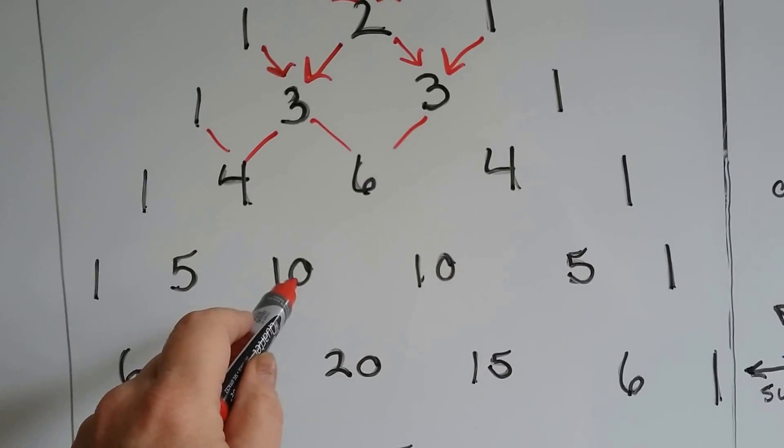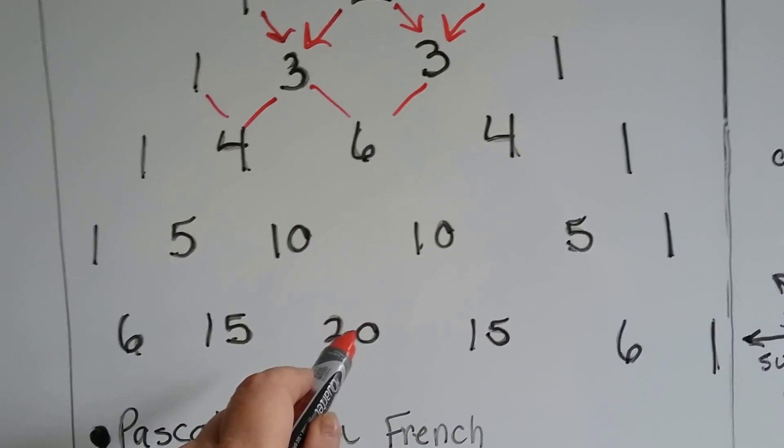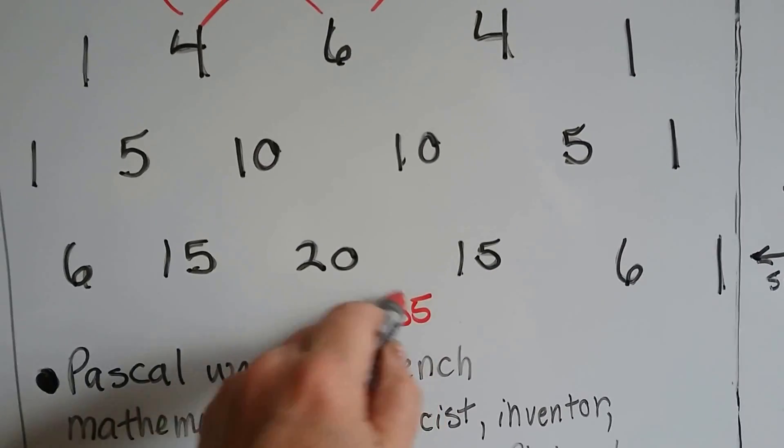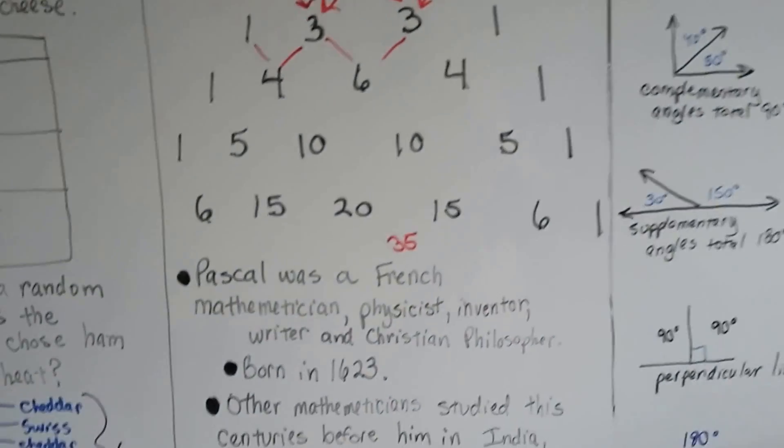This four and this six equals that ten. This ten and this ten equals that twenty. See? This twenty and this fifteen, there'd be a thirty-five here, wouldn't there? And that's how his triangle goes. It slowly trickles down and it adds like that.